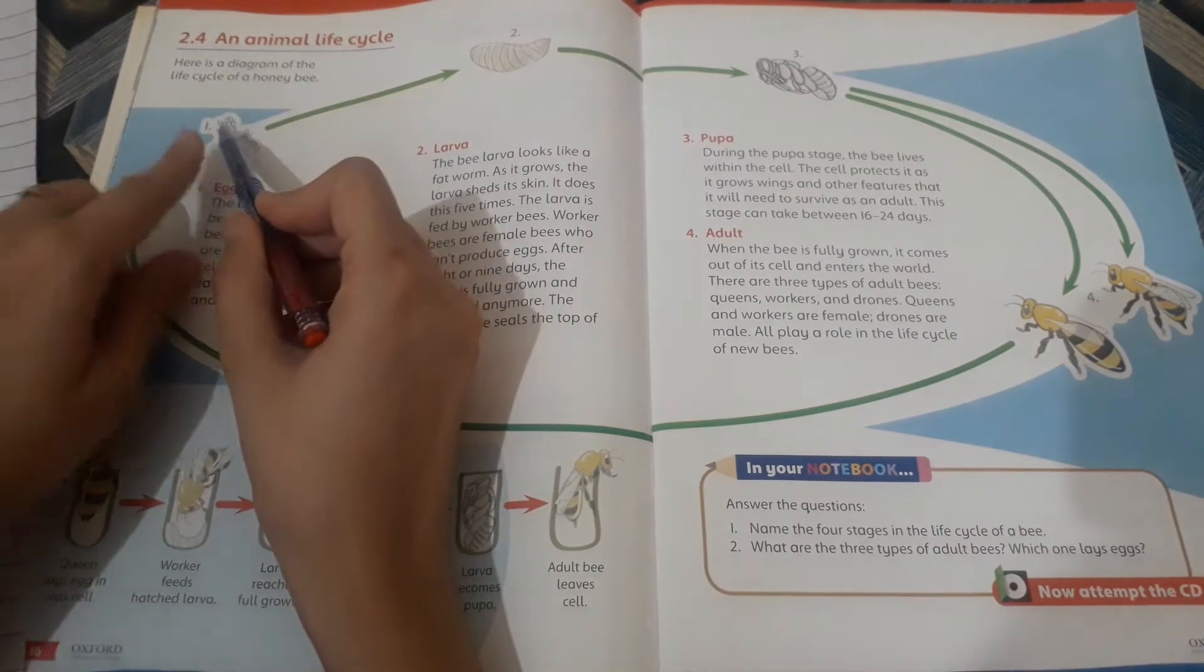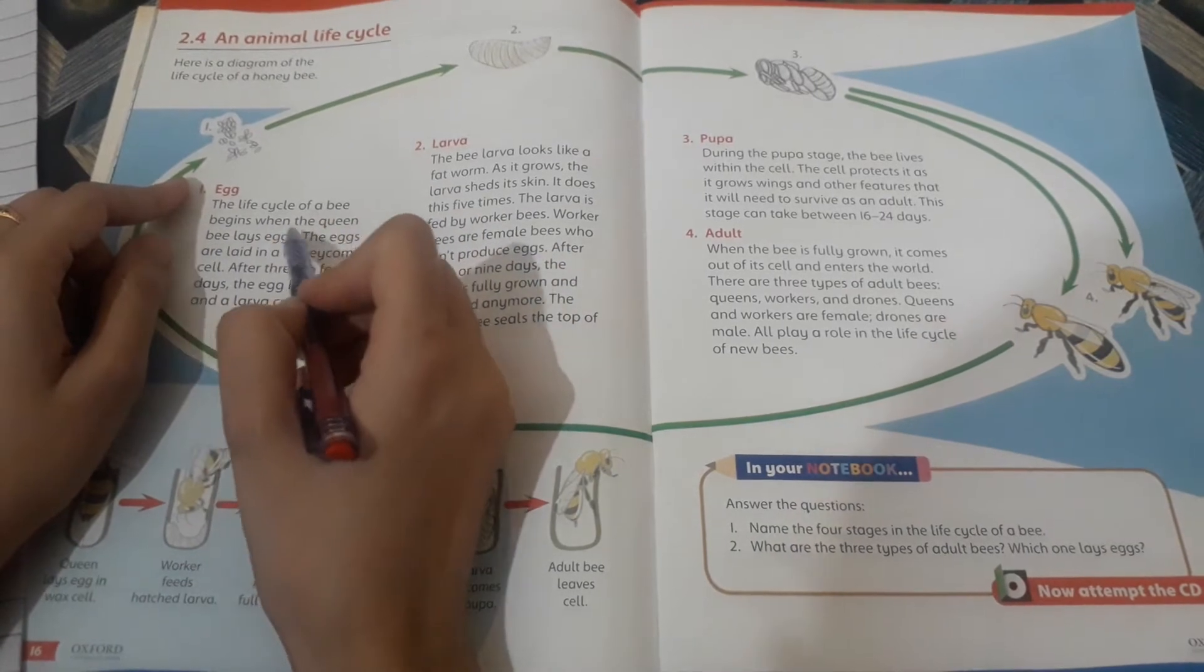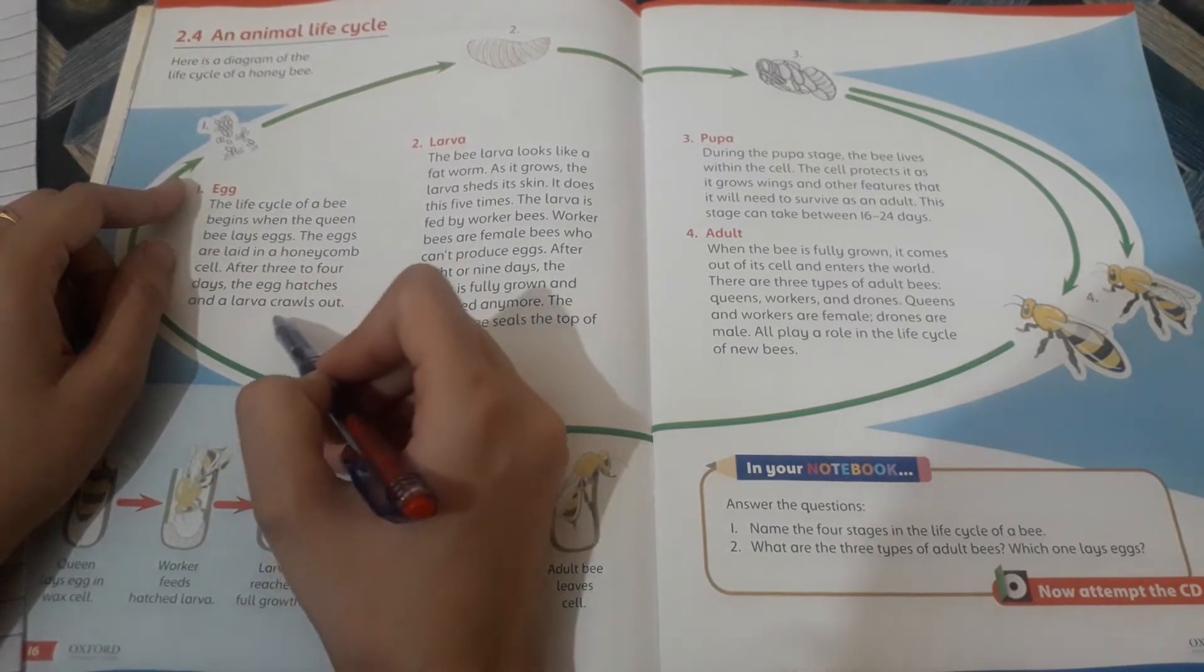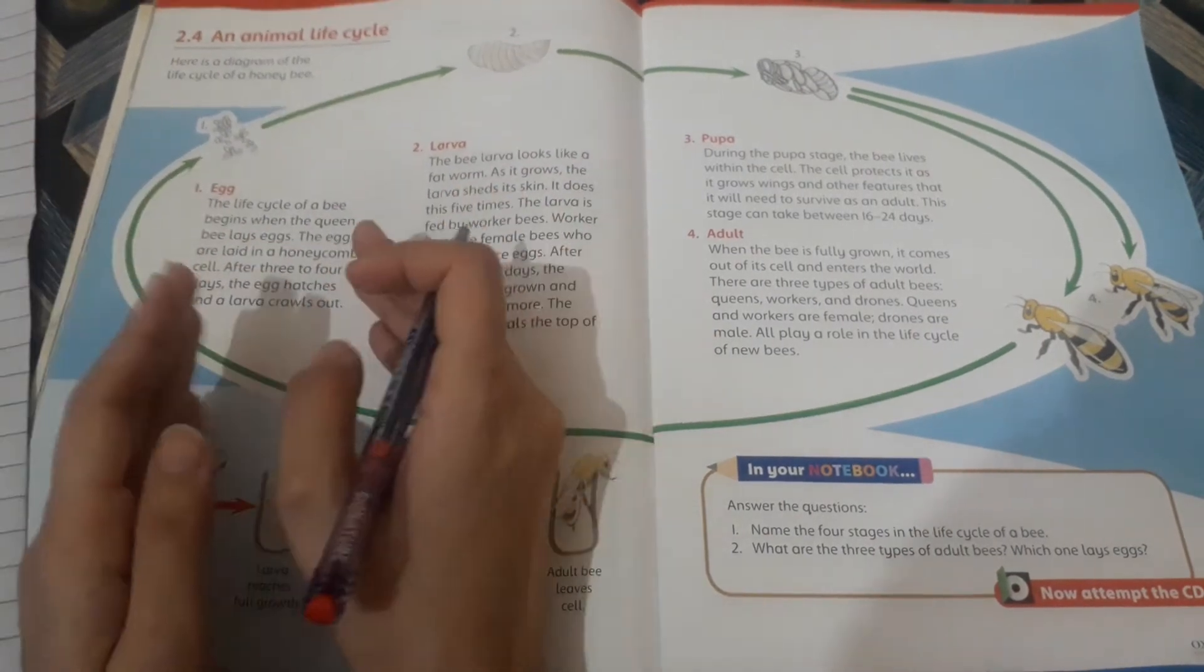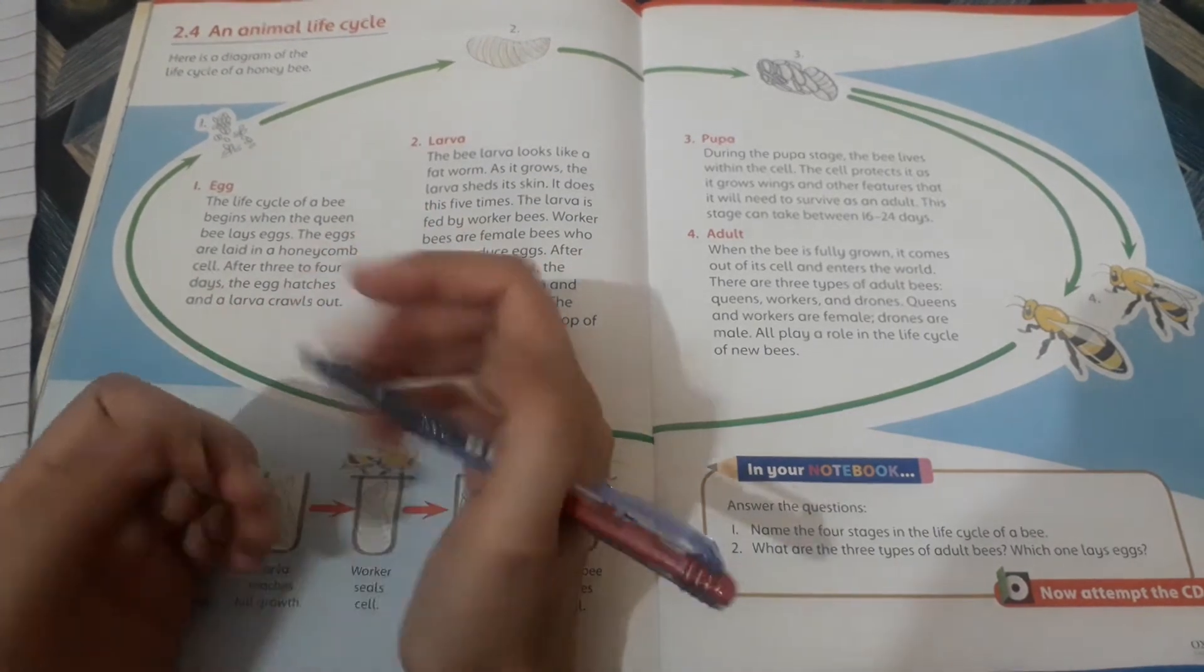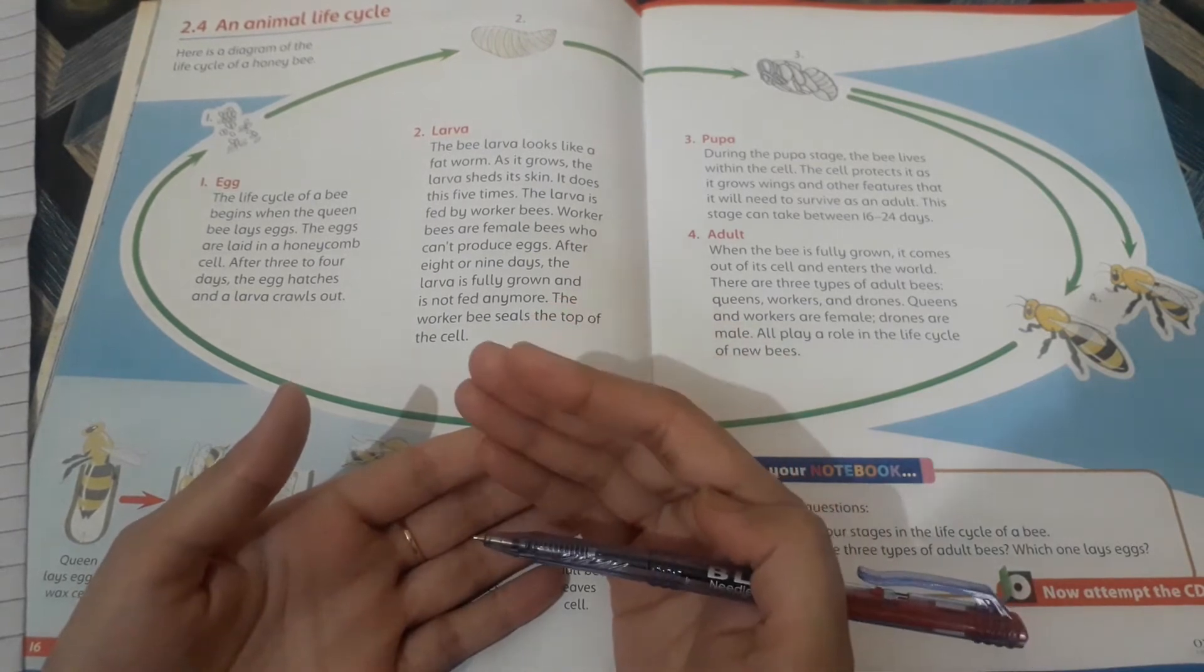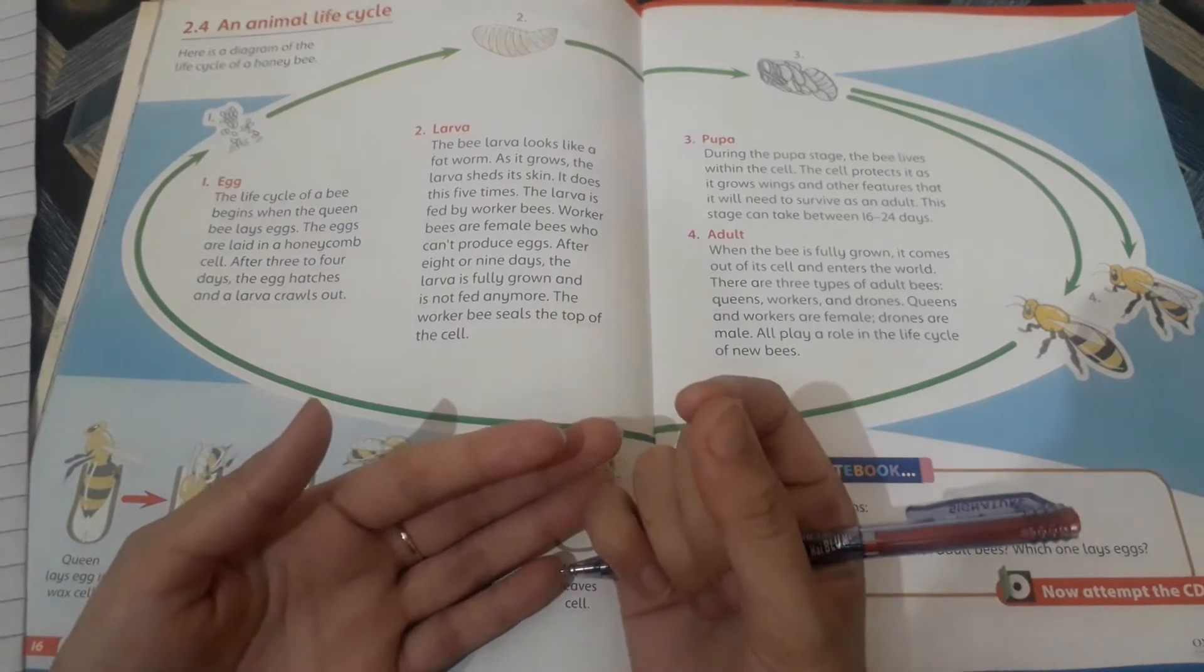The life cycle starts from the egg. The life cycle of a bee begins when the queen bee lays eggs. The eggs are laid in a honeycomb cell. After three to four days, the egg hatches and the larva crawls out. The queen bee lays eggs and after three to four days it leaves a larva.